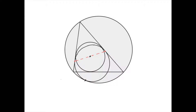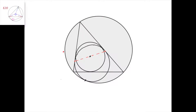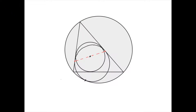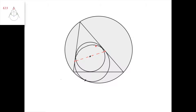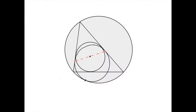Today we're going to learn the definition of a mixtilinear incircle. Suppose you have a triangle and you take its circumcircle. The mixtilinear incircle is the circle that is tangent to two of the sides of the triangle — for example this one and this one — and it is also tangent to its circumcircle.